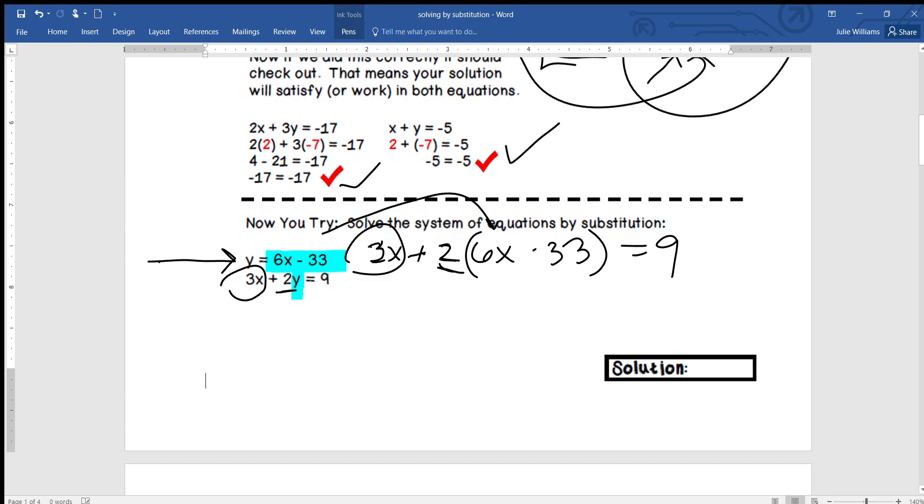So we're going to take that expression that y is equivalent to, y is equal to that, and we're going to plug it in for the y in the second equation. So I'm going to rewrite that second equation: 3x plus 2 times the quantity, because that's what y is equal to, 6x subtract 33 is equal to 9. Again, using this here, the y is equivalent to this expression.